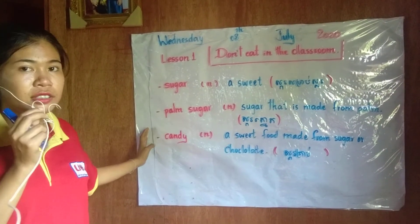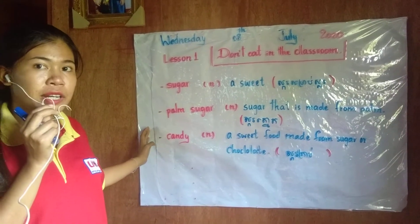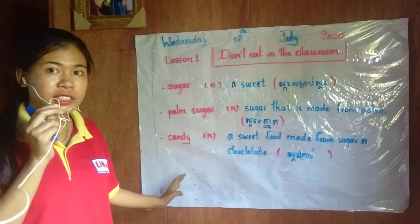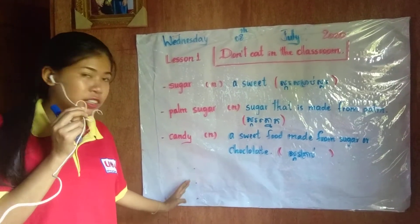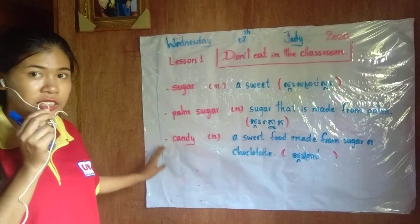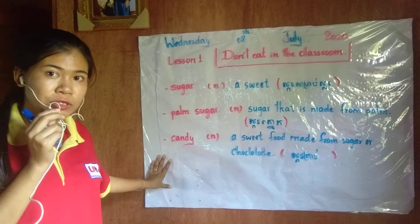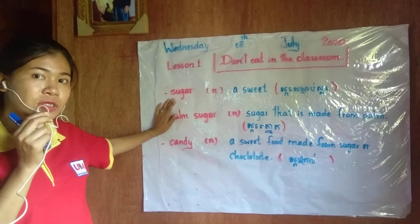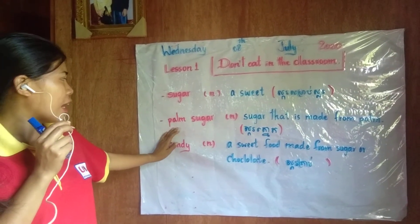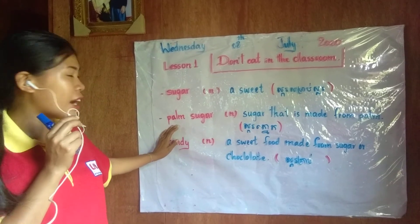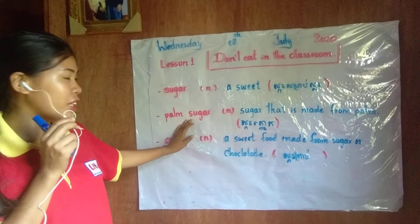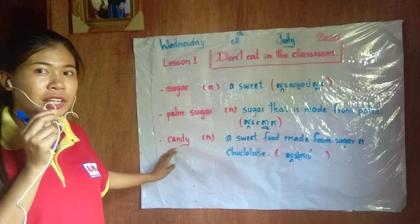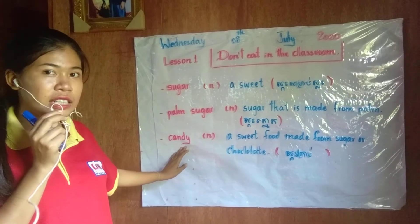Don't forget to learn the spelling by yourself and make sentences. Now let's see my example sentences, and then you try to make sentences by yourself. First: I don't like sugar. Second: I saw a palm tree in the market. Third: My sister likes to eat candy.